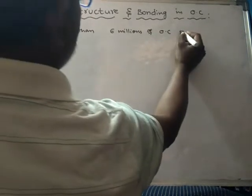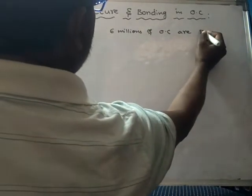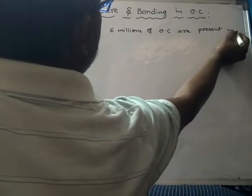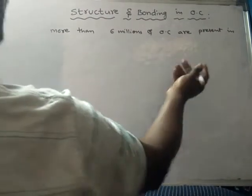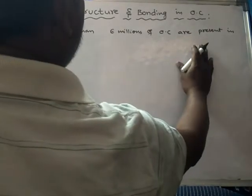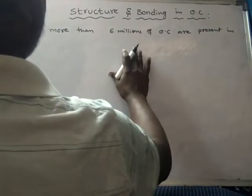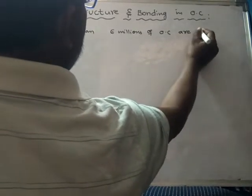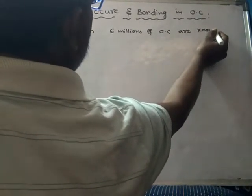Compounds are present in the nature, are present, or else there are known, more than 6 million of organic compounds are known.